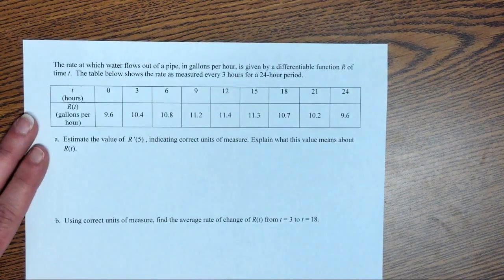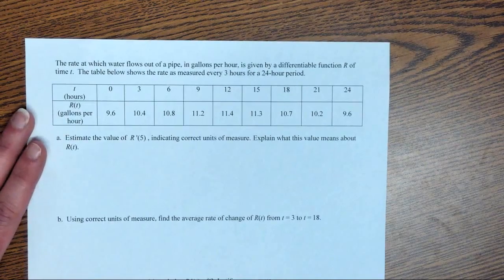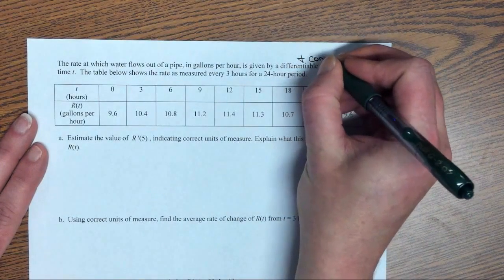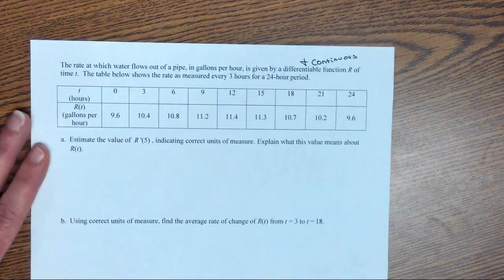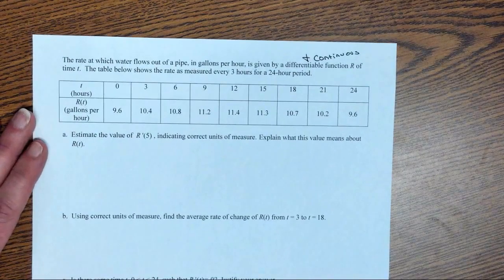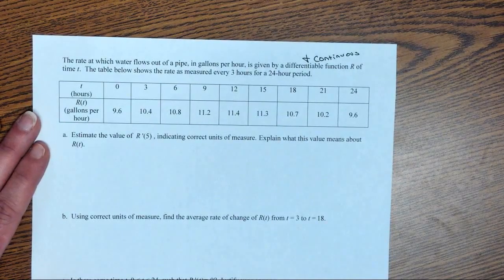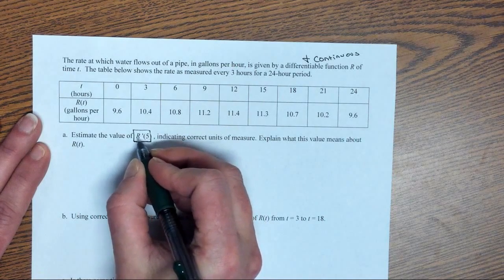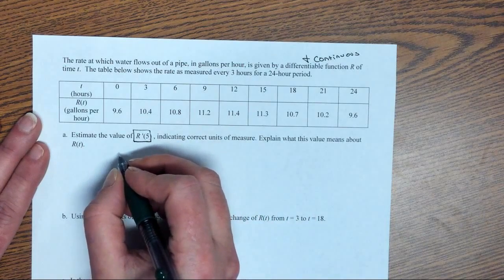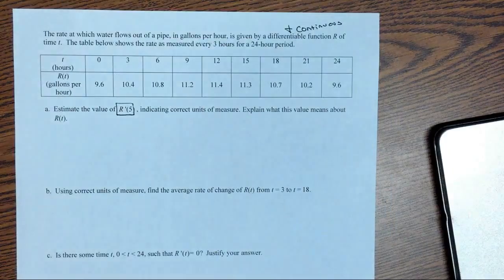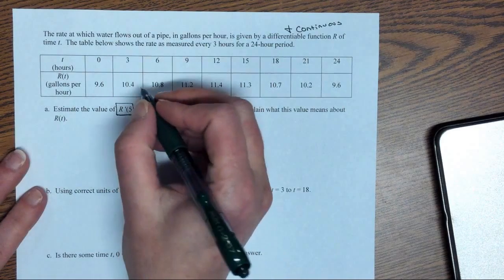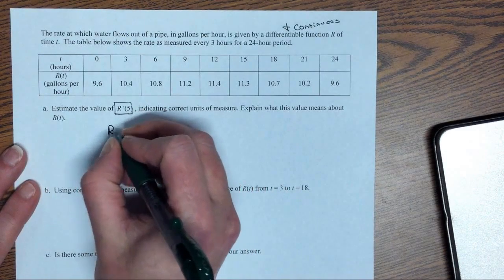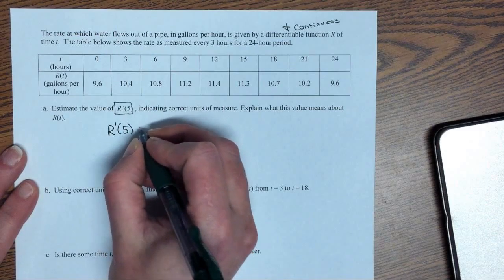So, the first example, the rate at which water flows out of a pipe in gallons per hour is given by a differentiable function. Now, immediately, if it is differentiable, then it is definitely continuous. The table below shows the rate as measured every three hours for a 24-hour period. So if we're going to estimate r'(5), that is the derivative of r at 5, in other words, the slope at 5, this means we need to find the slope around 5 because it is not in the picture here.